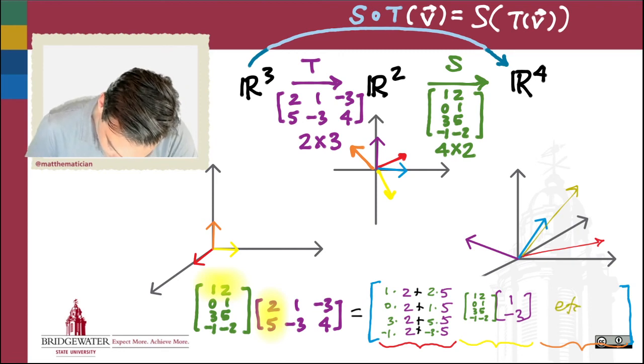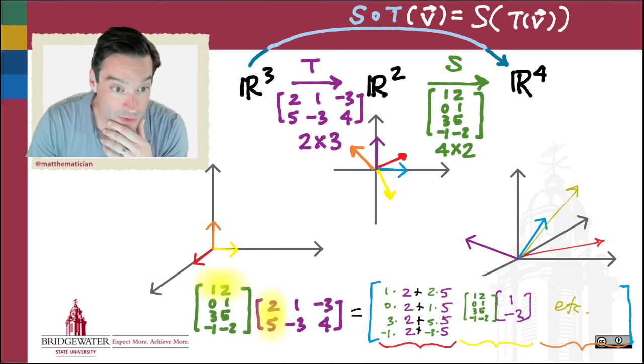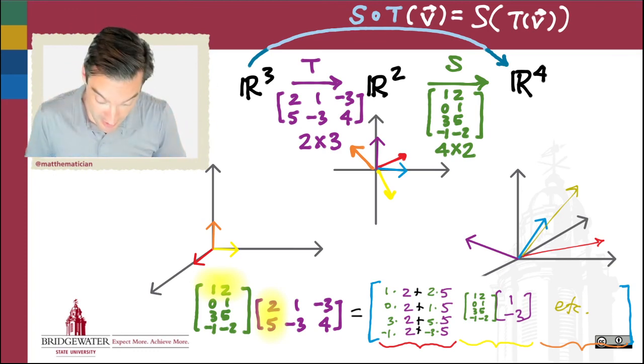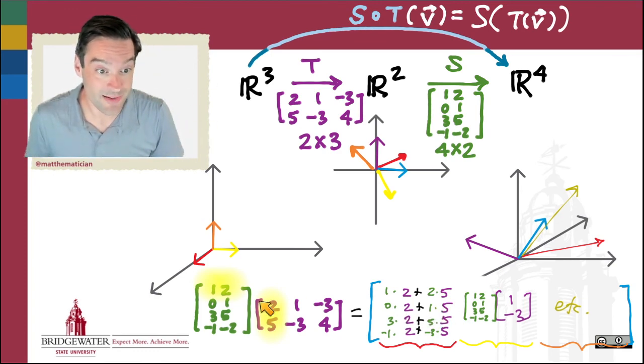And so on. This is usually what most linear algebra students take away from their introduction to multiplying matrices—just this algorithm. You go across the row over here, down the column over there, and multiply and add the sums of the products.